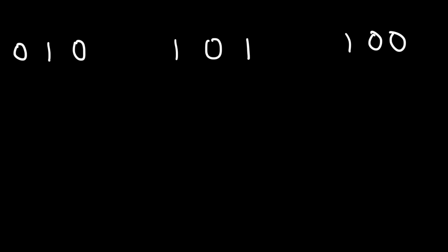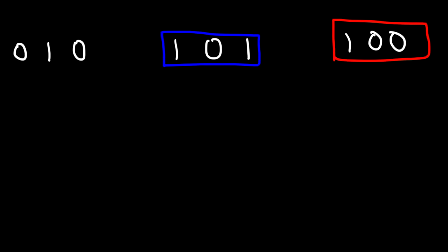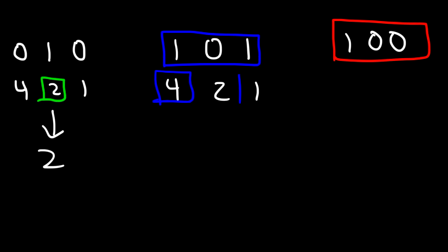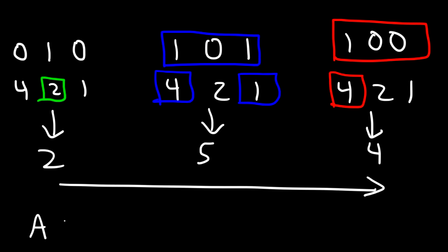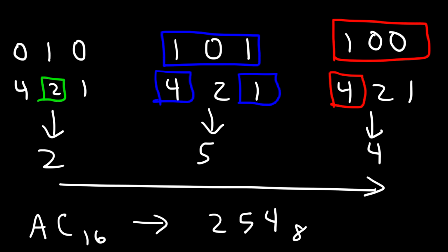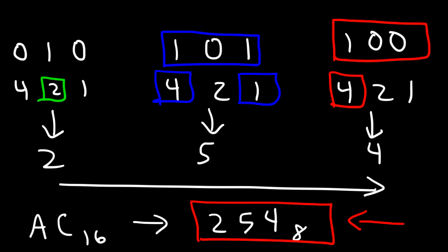So let's convert these three groups of numbers into a decimal value. We have 4, 2, and 1. We need to multiply 0 by 4 which is 0, 1 by 2 which is 2, and 0 by 1. So the decimal equivalent is 2. In the next example, we have a 1 next to the 4 and a 1, so 4 plus 1 is 5. And for the last one, we only have a 1 next to the 4, so 1, 0, 0 as a binary number equates to 4. Reading from left to right, AC in the hexadecimal system is 254 in the octal system.